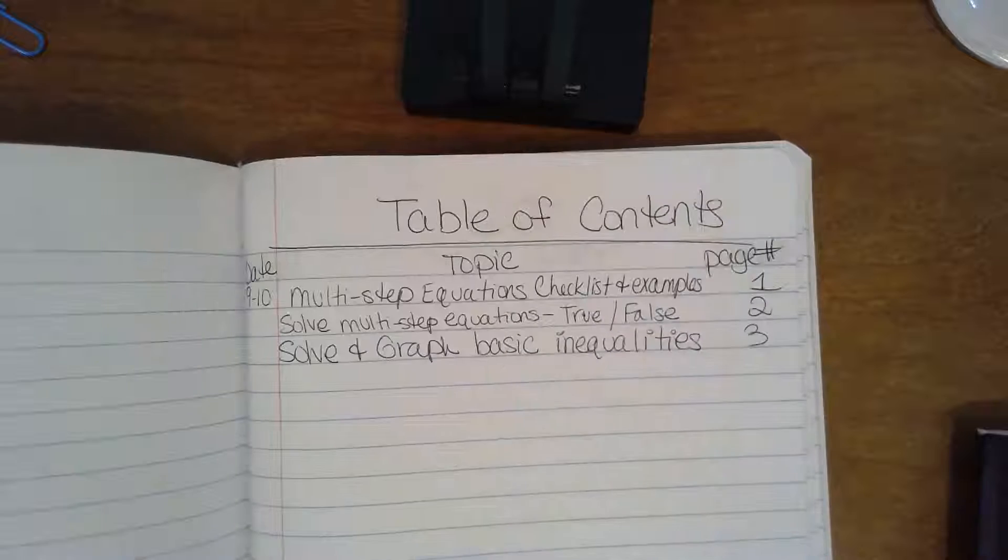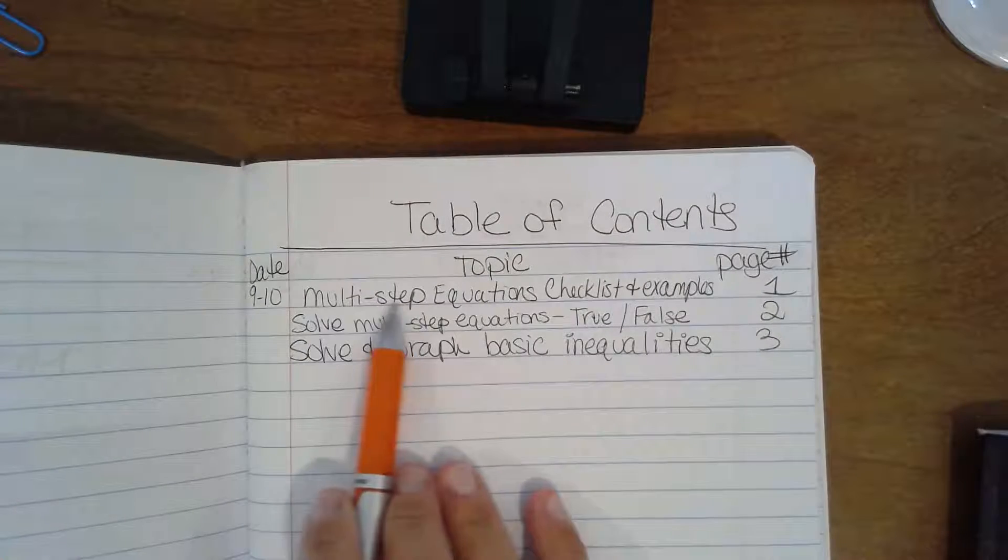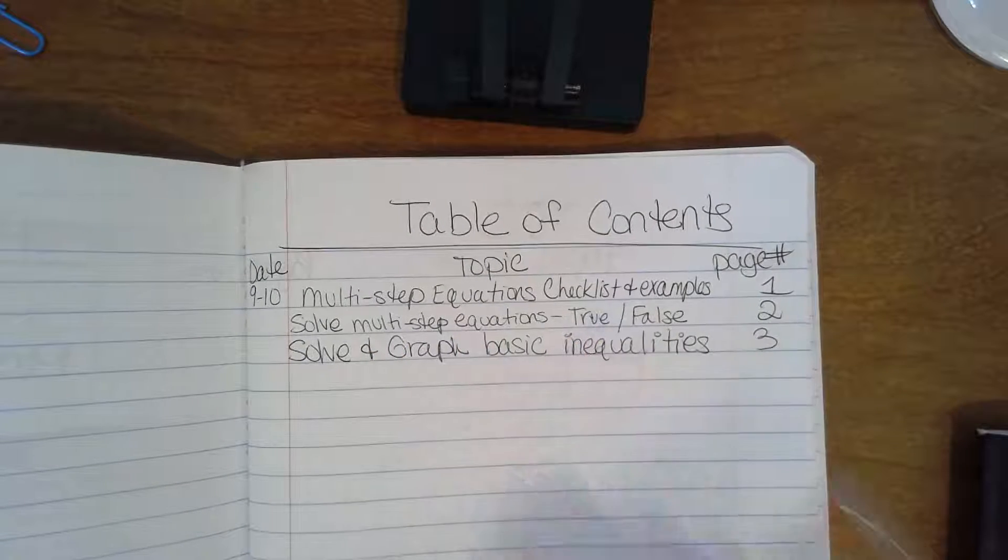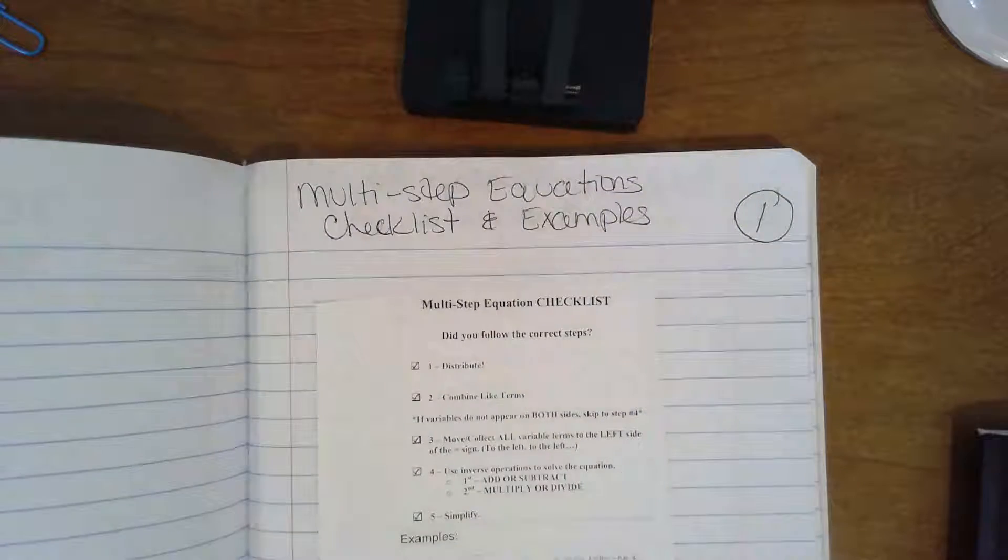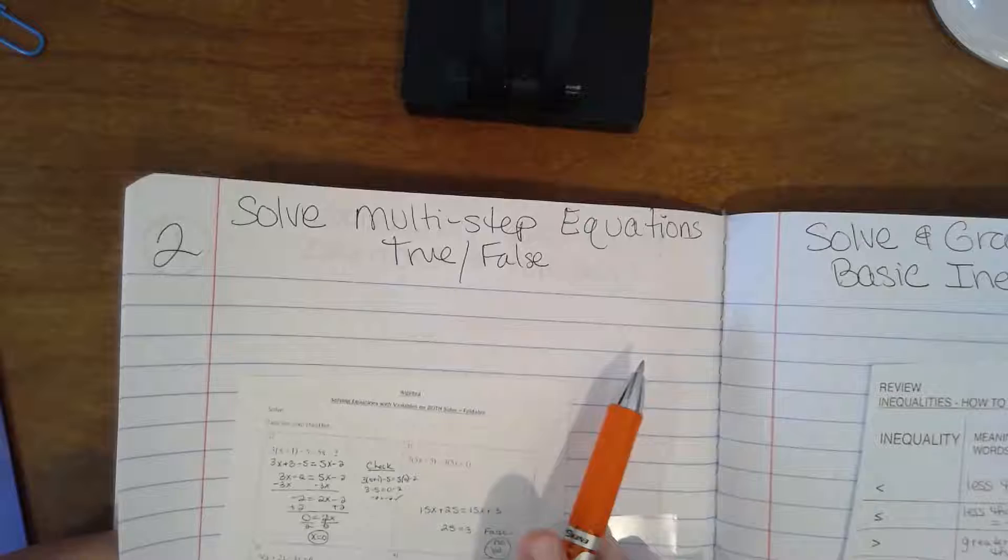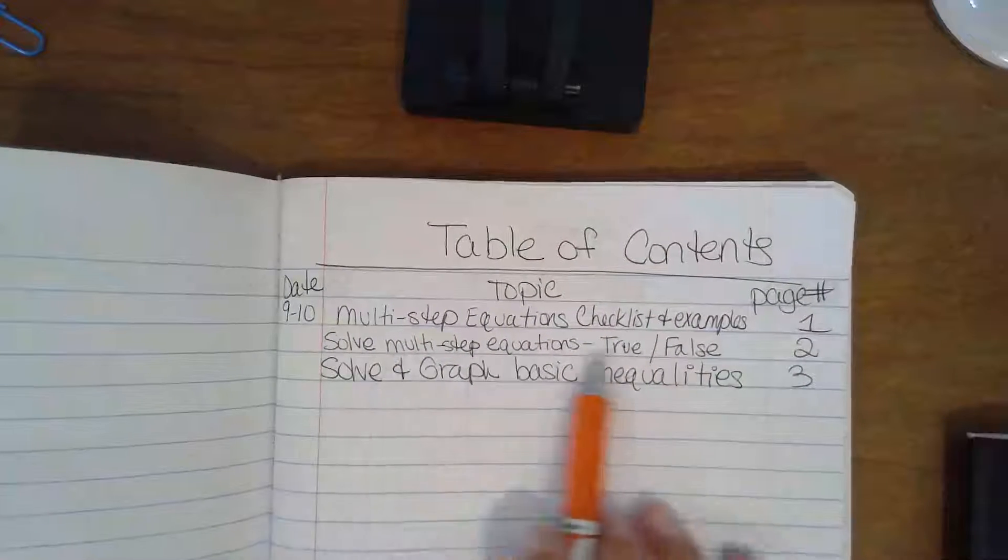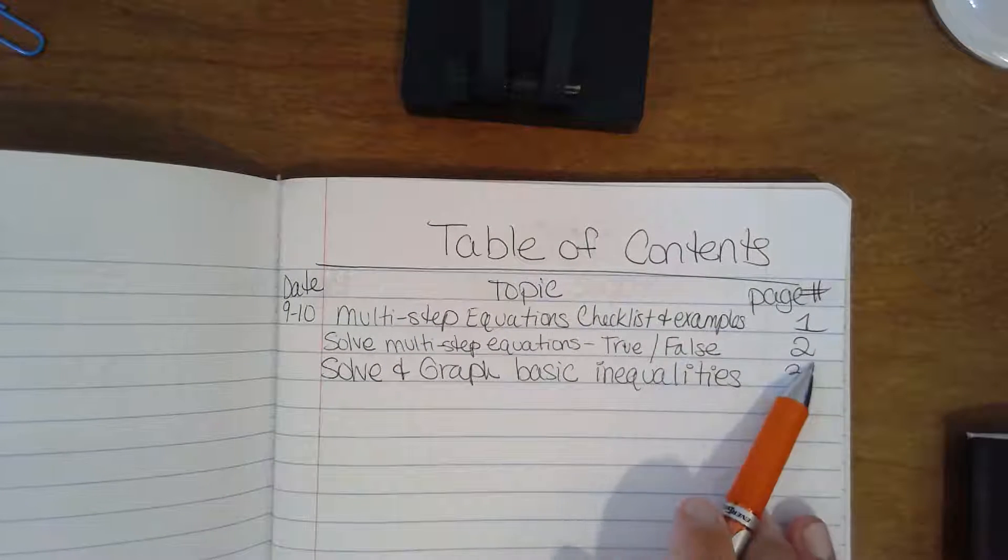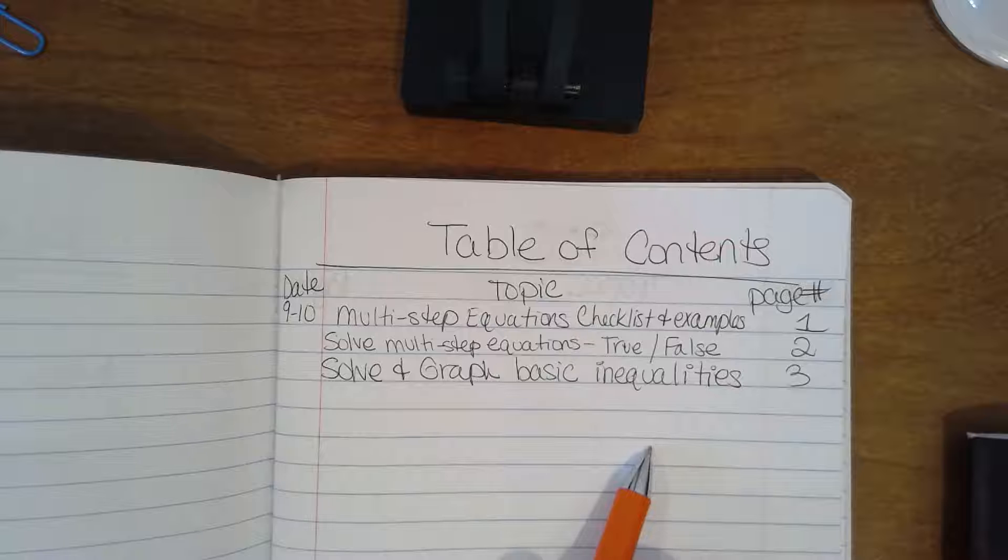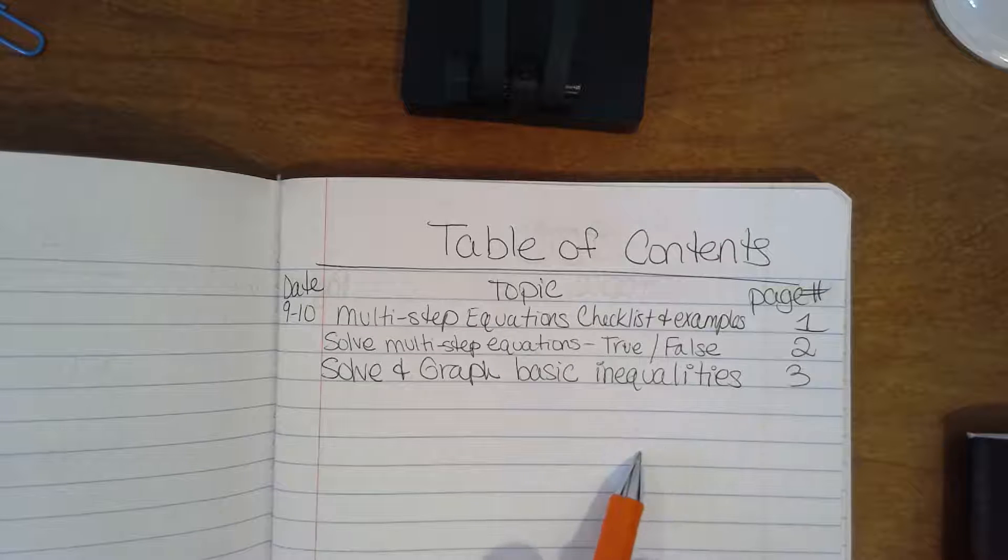So page one, right? I wrote multi-step equations, checklist, and examples. So what do I have on page two? Page two would be solved multi-step equations where we had the true and the false questions. So then I wrote that down, the title, pretty much the title of the lesson, page two. So you will have to keep track of your table of contents that way.